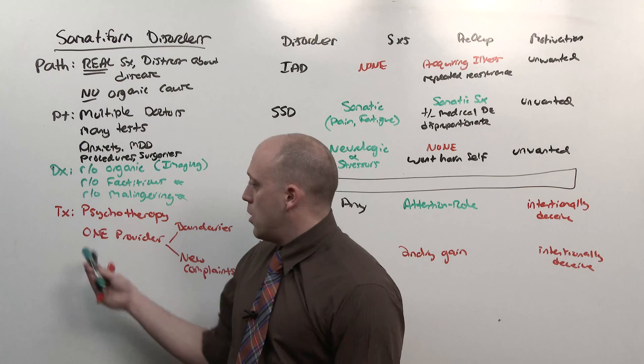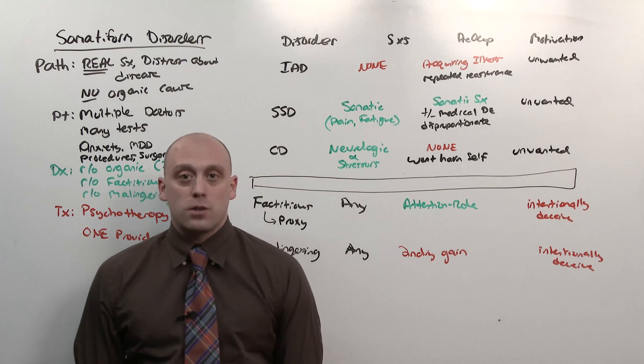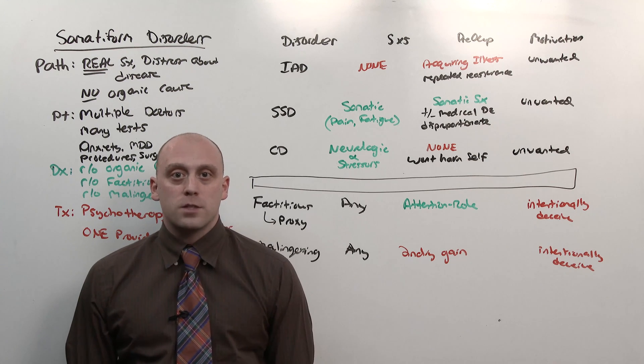Factitious and malingering can be any symptom because whatever they've done to themselves will be the presenting complaint. Factitious is to seek attention. Malingering is simply secondary gain. But both factitious and malingering are intentional with an attempt to deceive. Somatoform, in general, remember, treated with psychotherapy and limitations, unless it's malingering, in which case they go to jail. That's somatoform disorders.